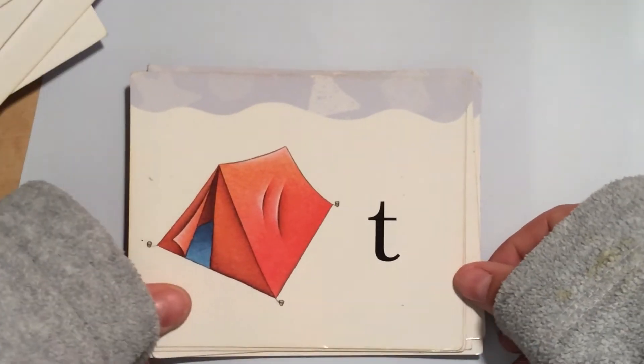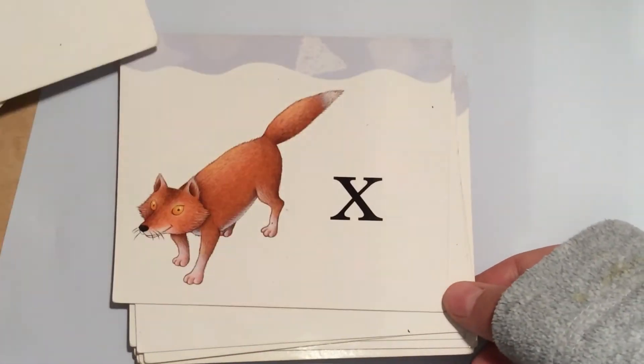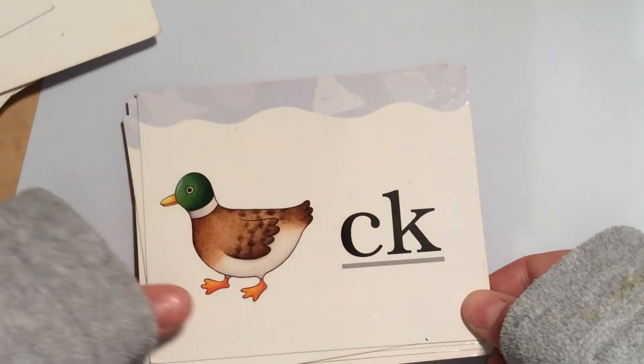There it is. Tent T, Octopus O, Inch I, Fox X, Duck K, Sun S.